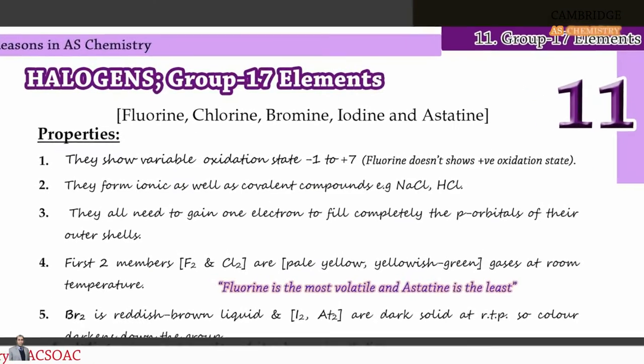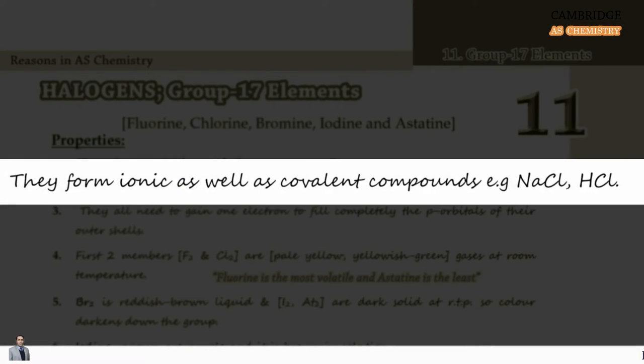Property 2: They form ionic as well as covalent compounds. For example, NaCl is an ionic compound but HCl is a covalent compound.